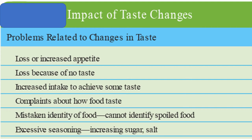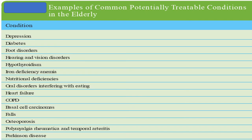Regarding the impact of taste challenges: problems related to changing taste include less appetite, loss of appetite because of no taste, increased intake to achieve some taste, complaints about how food tastes, mistaken identity of food, and excessive seasoning or increasing sugar and salt. Common potentially treatable conditions in the elderly include depression, diabetes, food disorders, hearing and vision disorders, hypothyroidism, iron deficiency anemia, nutrition deficiency, oral disorders interfering with eating, heart failure, COPD, basal cell carcinoma, falls, osteoporosis, polymyalgia rheumatica, temporal arteritis, and Parkinson's disease.